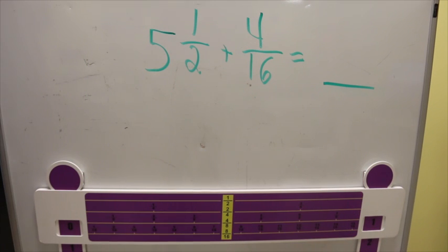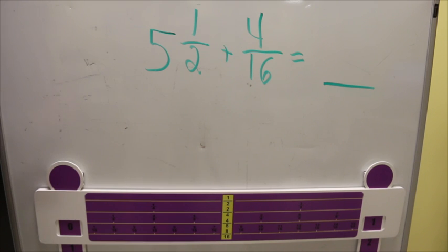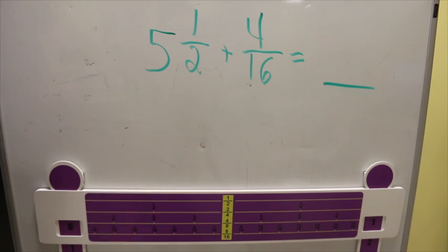Alright, the next manipulative we're going to do is my fractions sixteenths. With this, students can add or subtract mixed numbers with different denominators without paper and pencil. They can compare fractions less than or greater than. But the problem we're going to do today is 5 and 1 half plus 4 sixteenths.